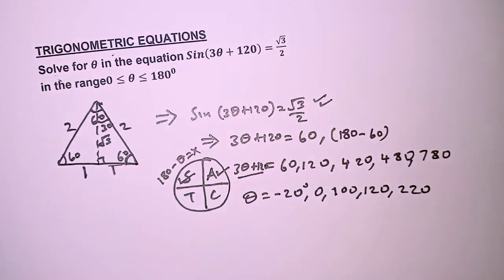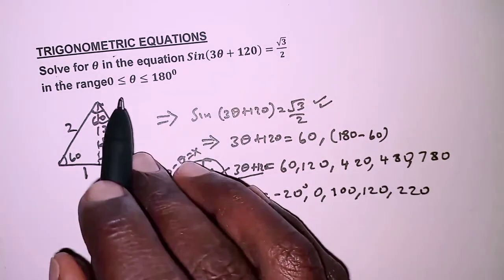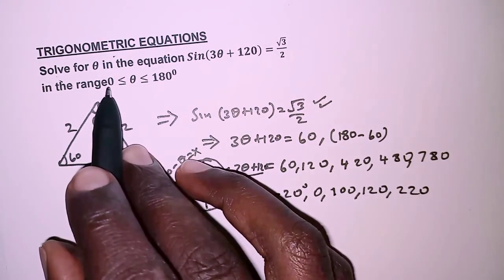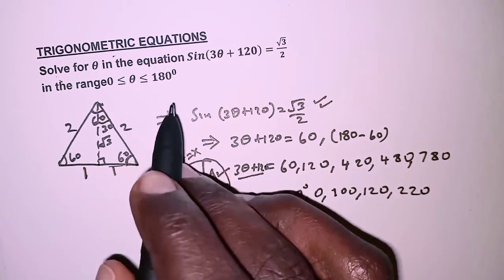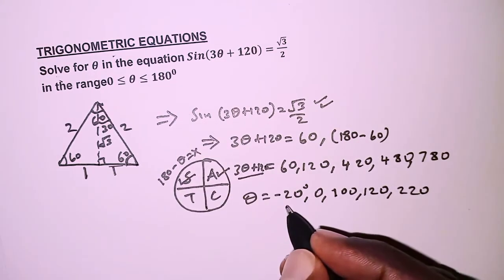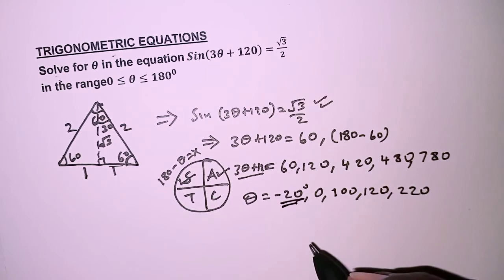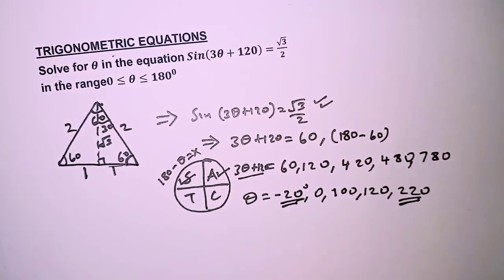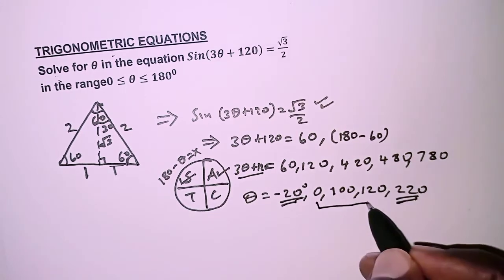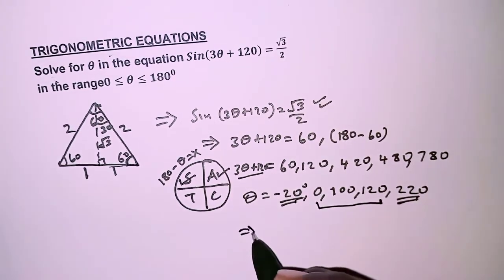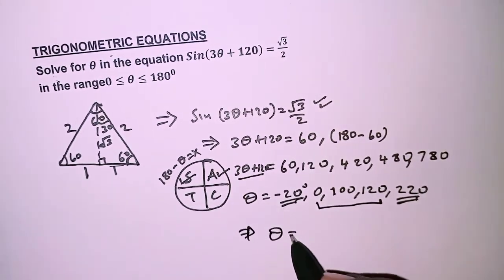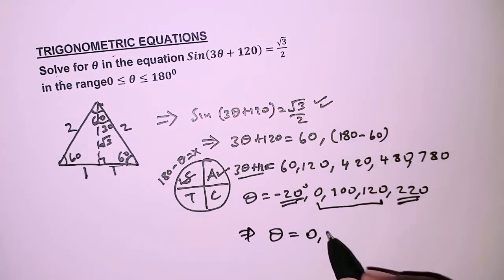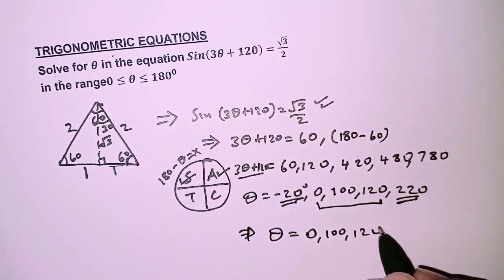Note that in the equation we are told our values need to be in the range 0° to 180°. So that means -20° is nullified and 220° is also nullified. We pick the values within the range, so that implies theta is 0°, 100°, and 120°.